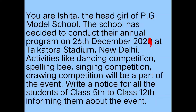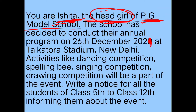So first understand the question — what is your designation? Head girl. What is your name? You have to sign as Ishita. So two things we have: your name is Ishita and your designation is head girl. The next important thing is to give the address of the noticing authority — the name of the organization. That must be clearly mentioned at the top, which is PG Model School. Whenever you get the name of the school, institution, designation, or name in the question, you have to strictly follow it.